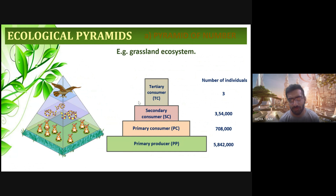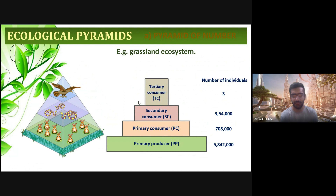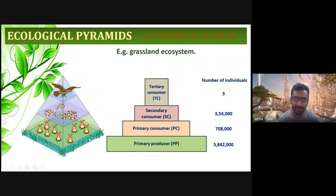The pyramid of number — an example of this type of ecological pyramid is the grassland ecosystem. The base of this ecosystem is the primary producers. Then come the primary consumers, secondary consumers, and tertiary consumers. The parameter being measured is the number of individuals or species in the ecosystem. The primary producers — the grass — number almost five million, as visible in the diagram.